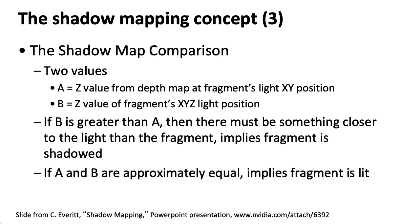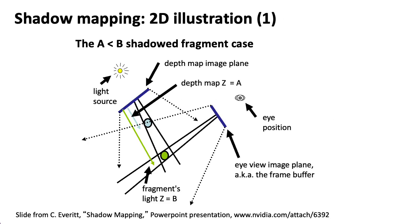That was a lot of words, and the algorithm probably doesn't make a lot of sense yet. It makes a lot more sense if you see it in the form of a diagram. Here's an example where we have the object in shadow. We have the camera over on the right and the light source in the upper left. We render the scene and compute the depth to various objects — the blue arrow represents the depth to the blue object, and we store that distance in the Z buffer.